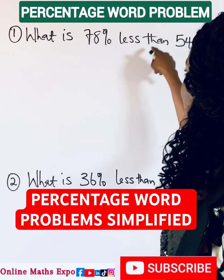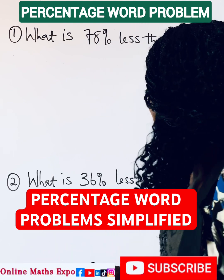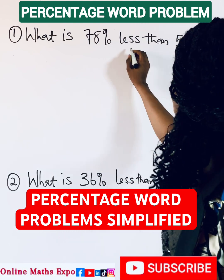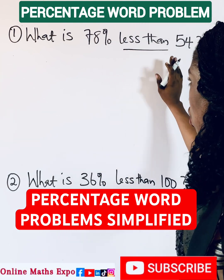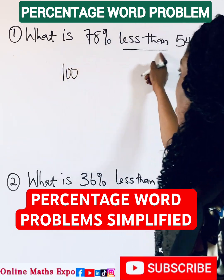What is 78% less than 54? So what do you do? Because you have the word 'less than,' you take the total percentage, which is 100. Then, because it's less than, you subtract.